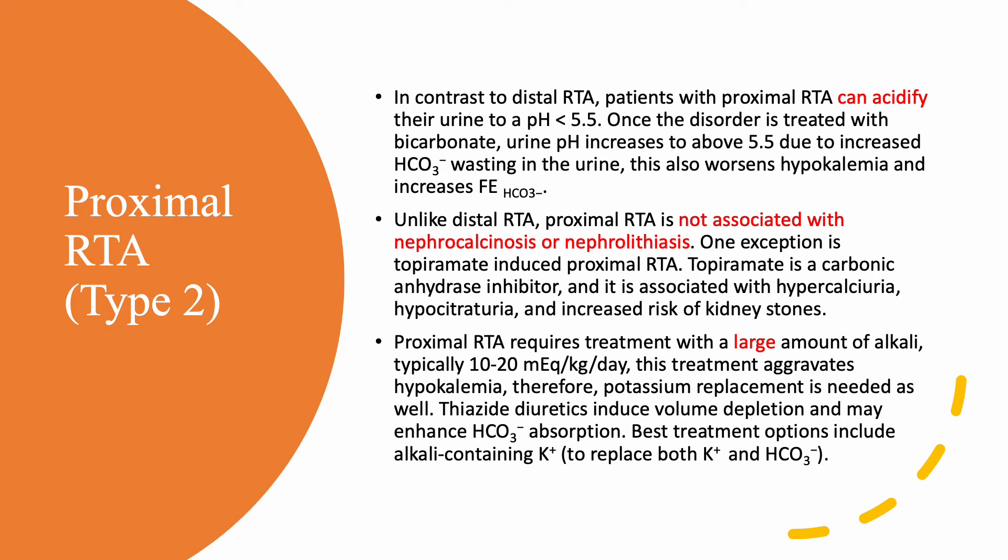Patients with proximal RTA can acidify their urine, meaning pH can be below 5.5. Please remember — especially nephrologists — that with distal RTA, by definition, the patient cannot acidify the urine. For complete distal RTA, you cannot have a pH of 5. With proximal RTA, it is possible to acidify the urine. Once you give bicarbonate, urine pH increases because you waste more bicarbonate. Also, giving bicarbonate worsens hypokalemia because bicarbonate excretion with sodium drives potassium out — this is why potassium must be replaced first.